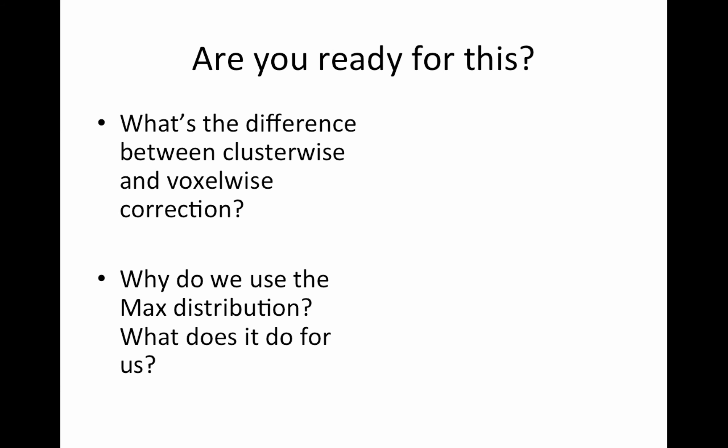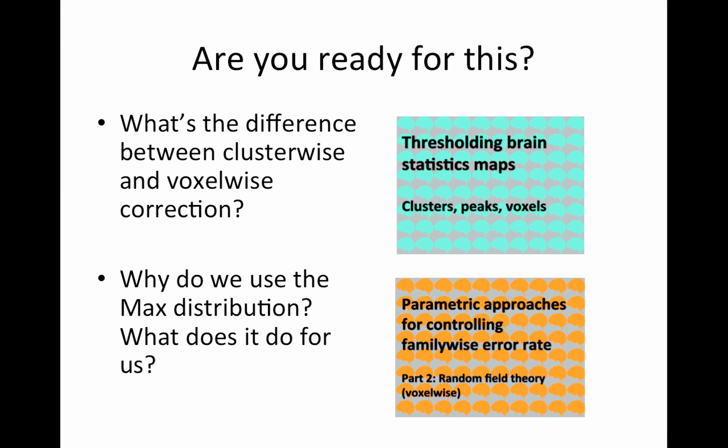Make sure you're ready for this. What's the difference between cluster-wise and voxel-wise correction? And why do we use the max distribution and what does it do for us? If you do not know the answers to these two questions, revisit these two lectures: thresholding brain stat maps and parametric approaches for controlling family-wise error rate part two.